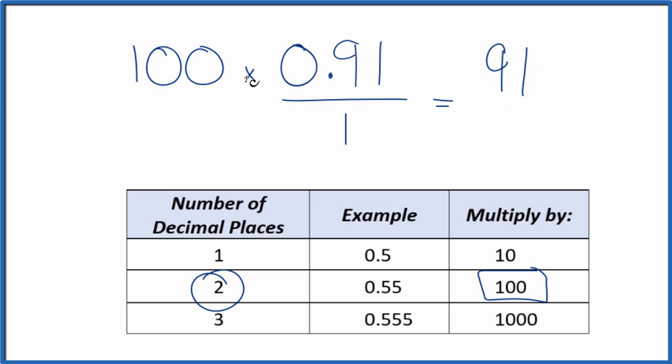But we can't just multiply the numerator by 100. We also have to multiply the denominator by 100. Think of it this way: 100 divided by 100, that's 1. We're just multiplying by 1. We don't change the value, just the way it's written. So 100 times 1, that's 100.